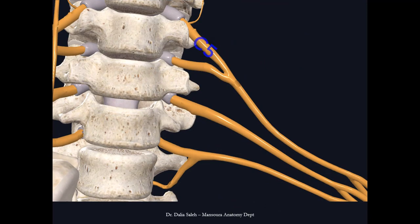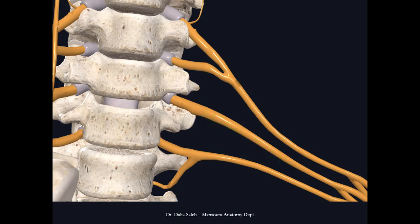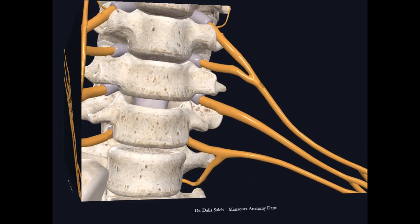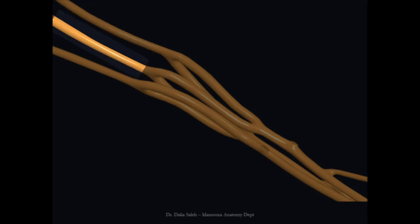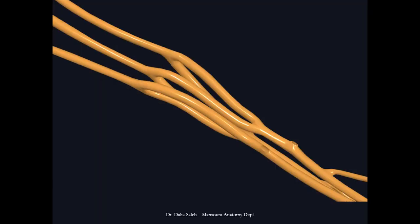At the root of the lower limb, the lumbar nerves and the sacral nerves together form the lumbosacral plexus. These are the spinal cervical nerves: C5, C6, C7, C8, and the first thoracic nerve. The fifth and sixth cervical nerves unite to form the upper trunk of the brachial plexus, while C7 continues as the middle trunk, and C8 and T1 form the lower trunk. Each trunk then splits into anterior and posterior divisions.